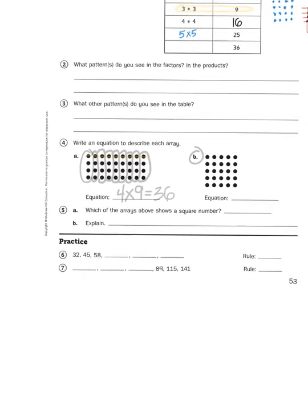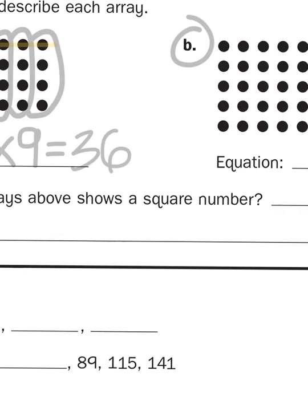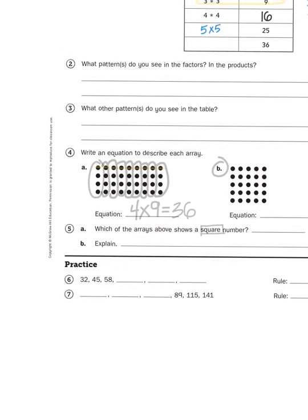And then it asks us to tell which of these arrays shows a square number. Well, if you can tell the difference between a square and a rectangle, that should be pretty easy. Okay, then finally, down at the bottom,